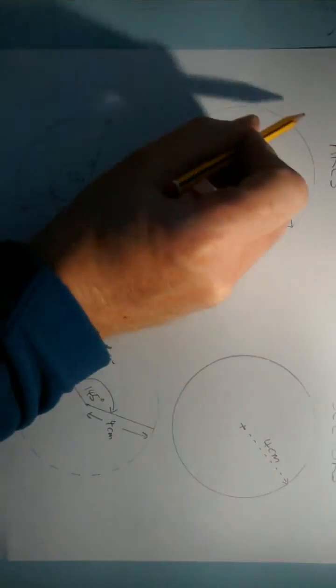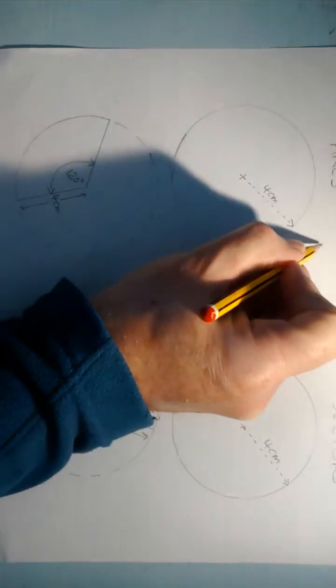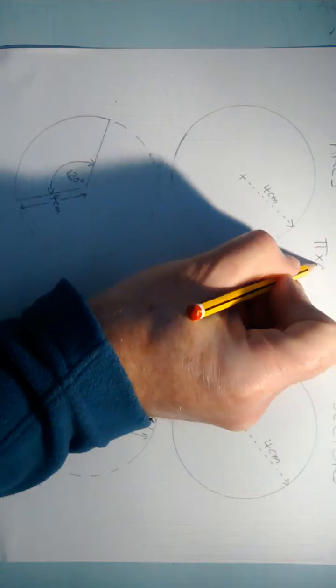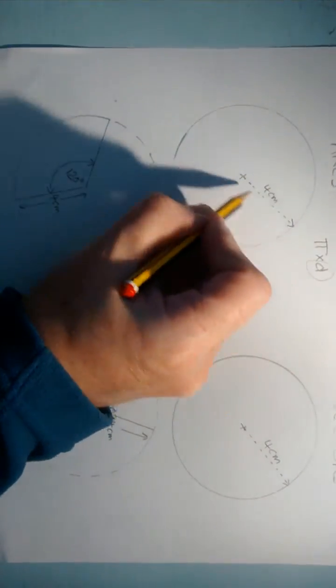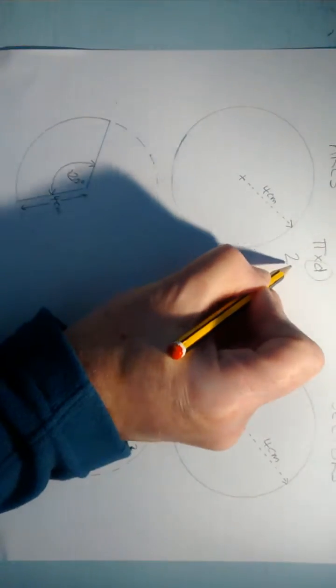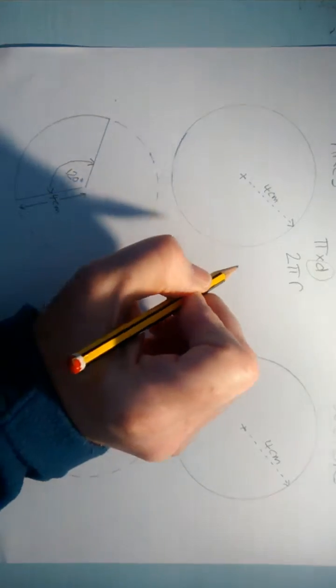The arc of a full circle is basically the circumference of the whole circle, and the circumference of a whole circle is equal to pi times the diameter. But given that the diameter is 2 times the radius, sometimes that's written as 2 times pi times r. 2 times the radius, in other words the diameter, times pi.